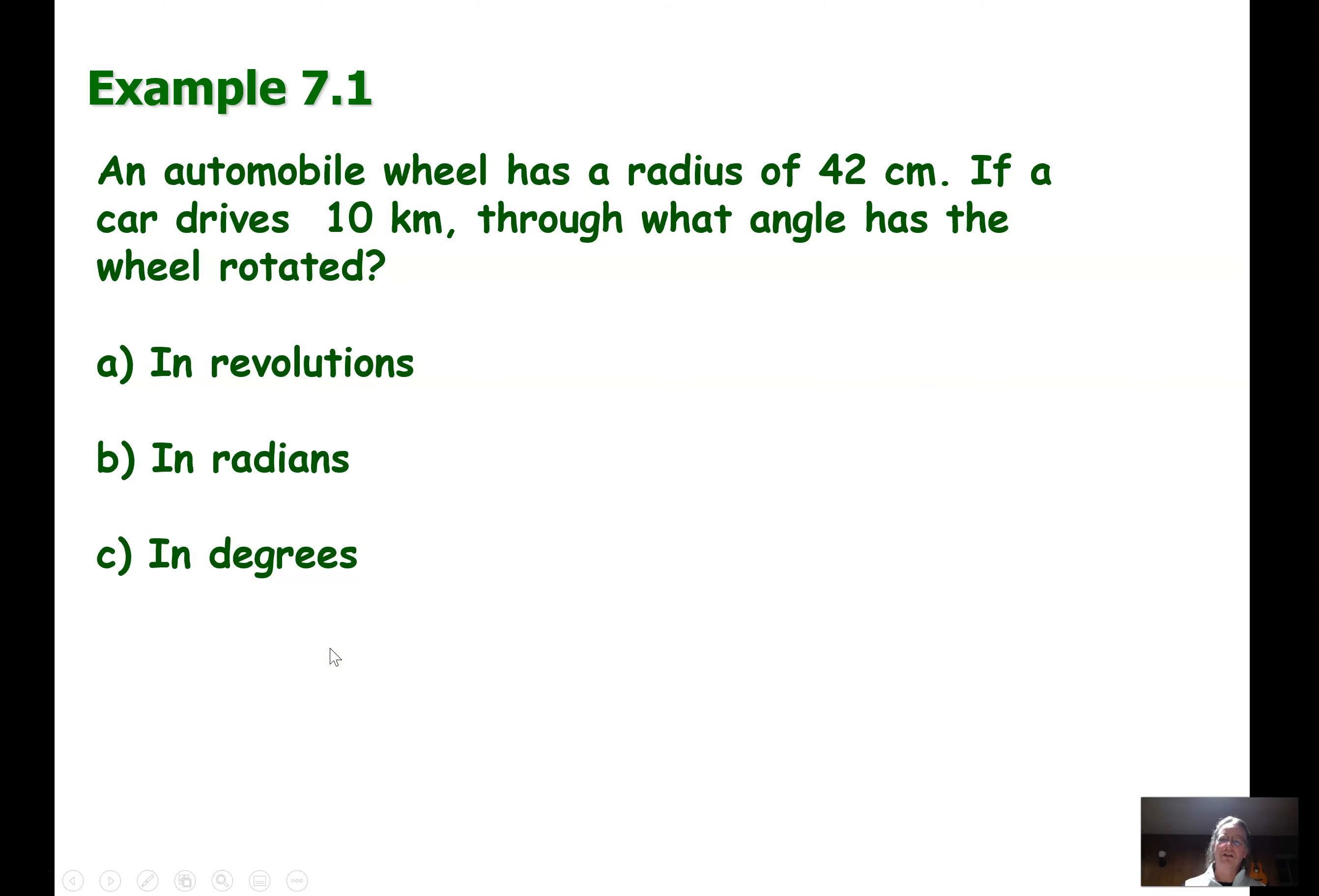Pop quiz. I know how much you guys love the math. Automobile tire has a radius of 42, I don't know where the 12 comes from, I really don't. It's night. 42 centimeters. If a car drives 10 kilometers, through what angle has the car rotated? Alright.